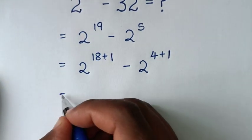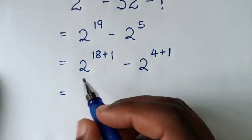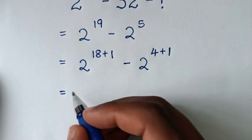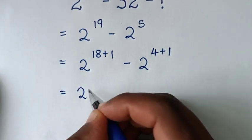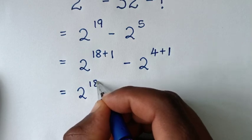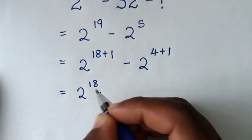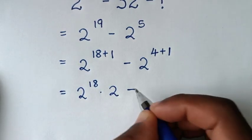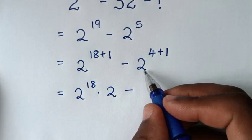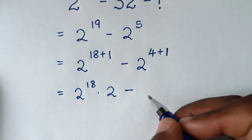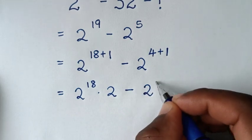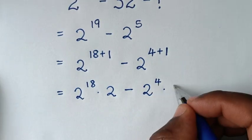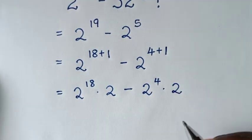In the next step, 2 power of 18 plus 1 is the same as 2 power of 18 times 2 power of 1, which is 2. Minus 2 power of 4 plus 1, which is the same as 2 power of 4 times 2 power of 1, which is 2.